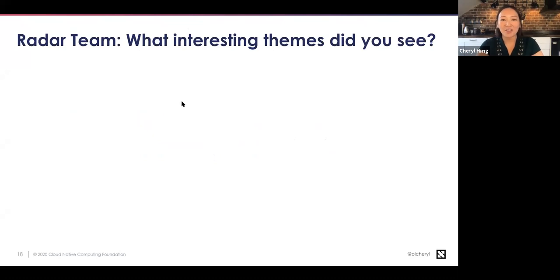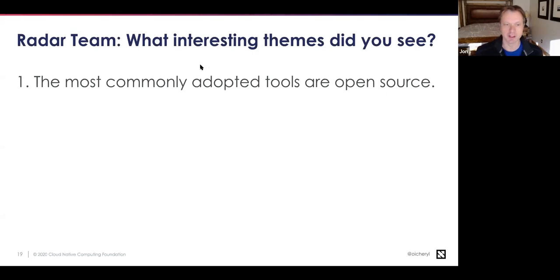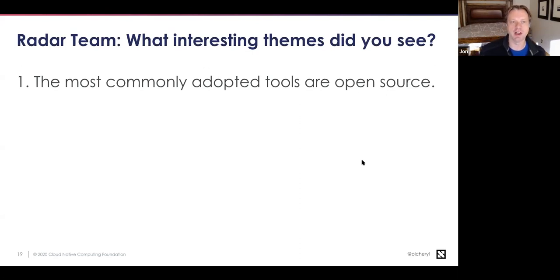Now moving to themes. The first theme: the most commonly adopted tools are open source. Cheryl thought at first, 'Well, duh — of course everything is open source in this world.' John explains it's unsurprising insofar as the end user group are people almost all running Kubernetes either managed or open source — they've bought into open source, community-supported, cloud provider-supported technologies. But at a certain scale, it actually takes significant effort and time to run many of these open source tools. Interestingly, many large companies are investing the time and energy to run their own Prometheus, Fluentd, or Grafana and manage that complexity rather than paying a SaaS provider.